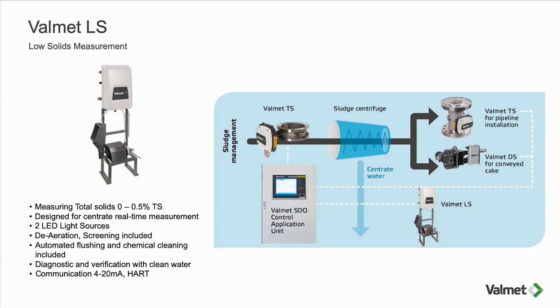The main challenge with centrate measurement is that the sample is very problematic — there's a lot of air, debris, and dirt build-up. Valmet LS is supplied as standard with de-aeration, screening to remove debris, and automatic flushing included to keep the measurement system clean. During the cleaning cycle we add chemical to keep the system as clean as possible. When flushing, we also measure the integrity of the light signal through water, so if the cell becomes dirty, a warning is given to the operator that action is required.